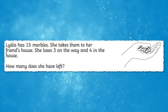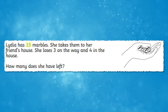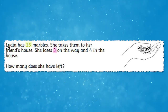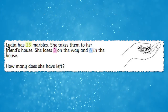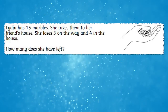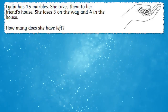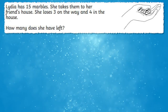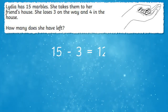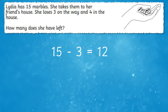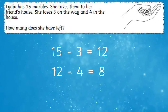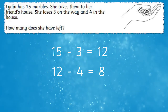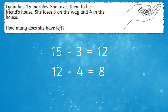For example, Lydia has 15 marbles. She takes them to her friend's house. She loses three on the way and four in the house. How many does she have left? Well, Lydia starts with 15 marbles. Then she loses three, so we start by writing 15 subtract 3 which makes 12, and then 12 take away 4 because she loses 4 more in the house. 12 take away 4 equals 8. So Lydia has 8 marbles left.